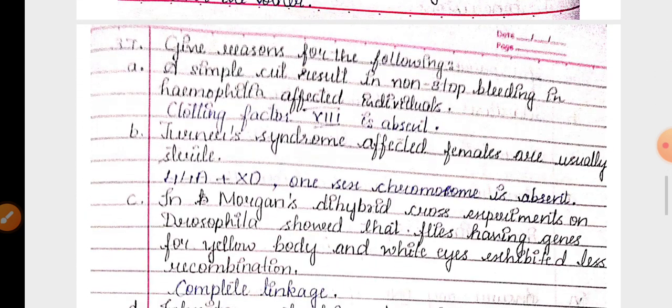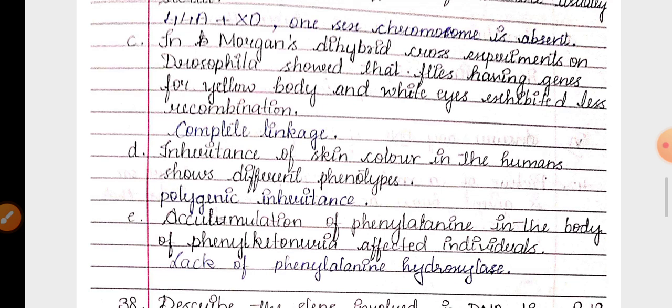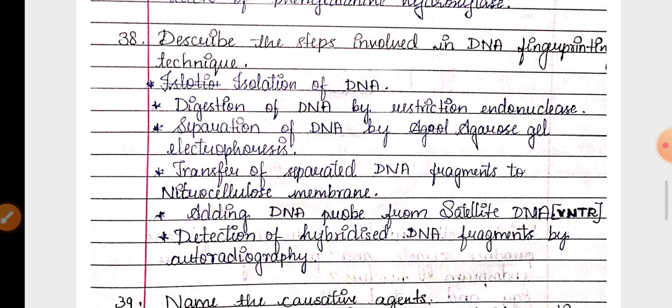Then 37th question is from principles of inheritance and variations. 5 sub-questions are there. Then 38th question, the features or steps of DNA fingerprinting.